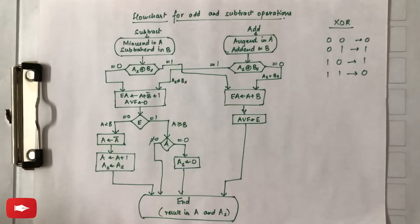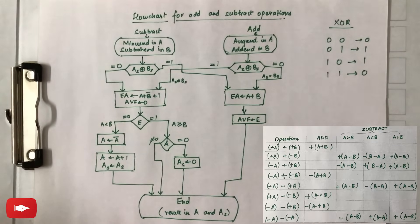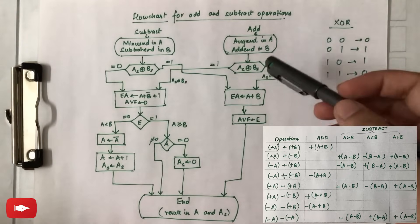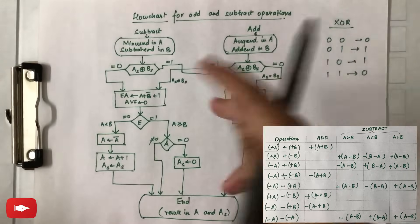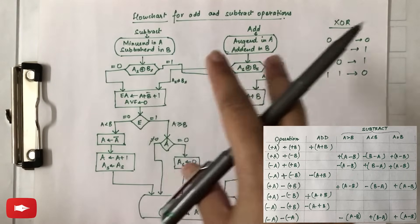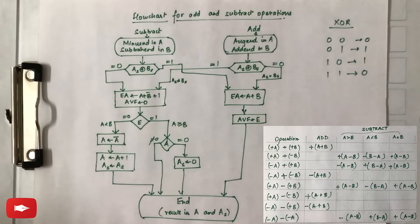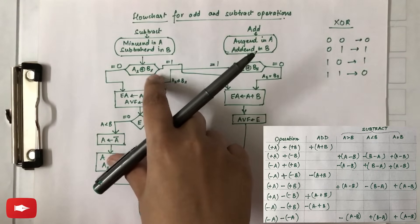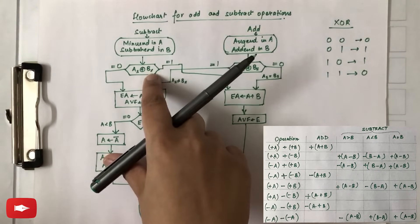If you remember from the previous video, we made a table for signed magnitude numbers where the addition and subtraction operation actually depended on the sign of the two numbers. To find whether subtraction or addition will be performed, we need to check if the sign bits of the two numbers are same or different. For that, we are going to perform XOR between the sign bits — As and Bs are the sign bits of the two numbers.